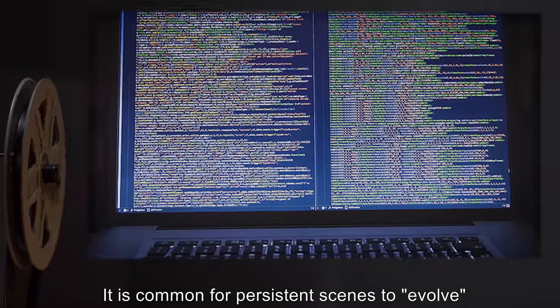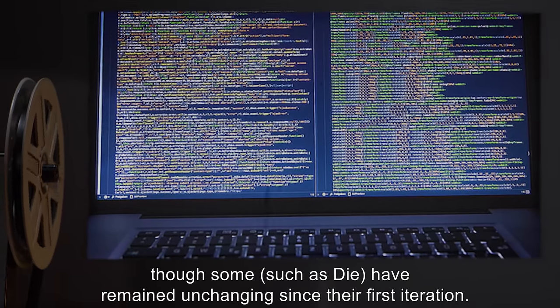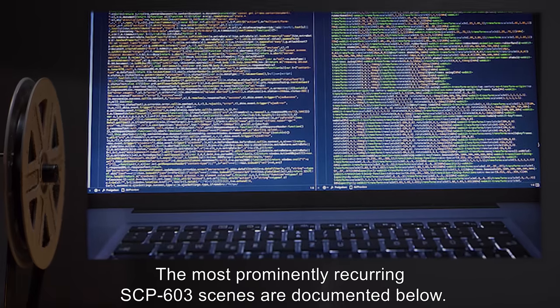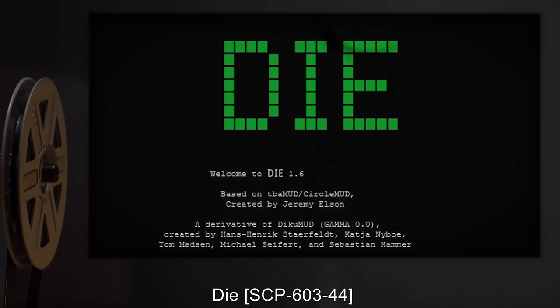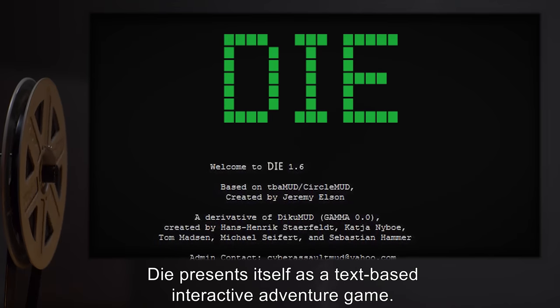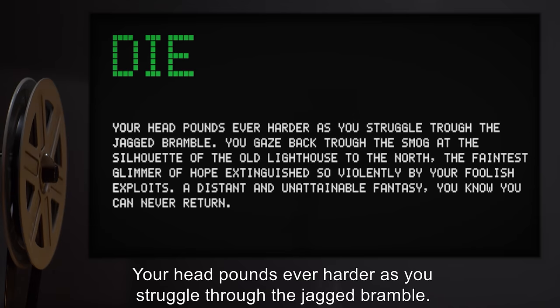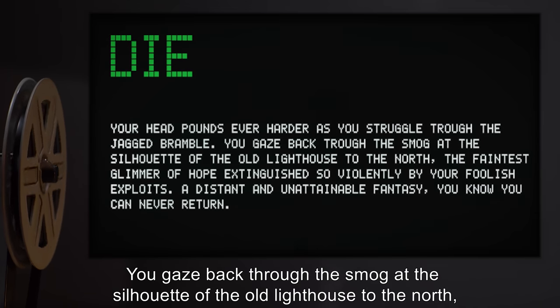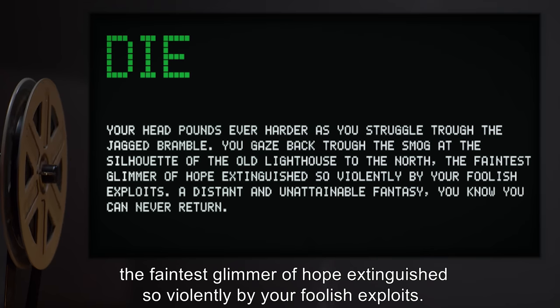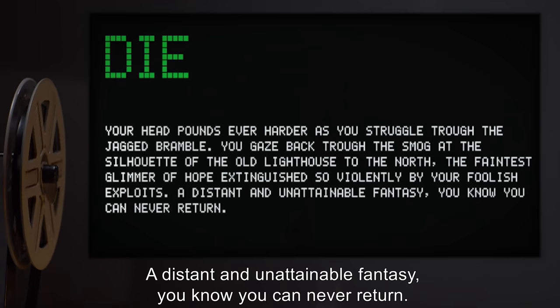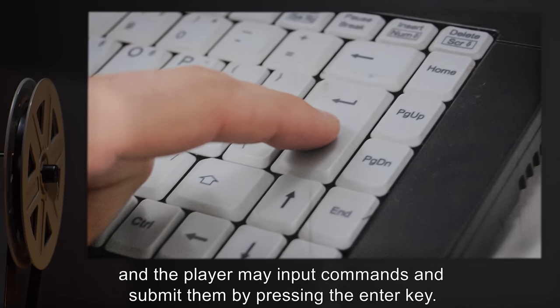It is common for persistent scenes to evolve with each version of SCP-603, though some, such as Die, have remained unchanging since their first iteration. The most prominently recurring SCP-603 scenes are documented below. Die presents itself as a text-based interactive adventure game. When Die starts up, the following passage is printed to the screen: Your head pounds ever harder as you struggle through the jagged bramble. You gaze back through the smog at the silhouette of the old lighthouse to the north, the faintest glimmer of hope extinguished by your foolish exploits. You know you can never return. A prompt appears below the passage, and the player may input commands and submit them by pressing the enter key.